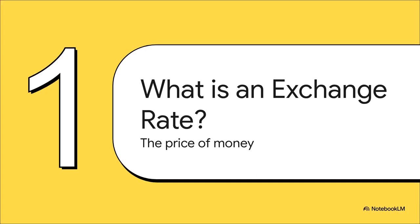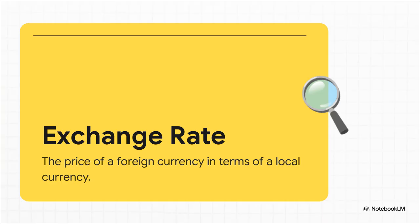All right, let's start at square one. What in the world is an exchange rate? Honestly, you can just think of it as a price tag. It's simply the price of one country's money, but paid for with another country's money. So for our example, let's say the exchange rate is 3.65 Israeli shekels to the US dollar. All that means is that you need 3.65 shekels to buy just one US dollar. That number, 3.65, that's the exchange rate — it's the price of a dollar in shekels.